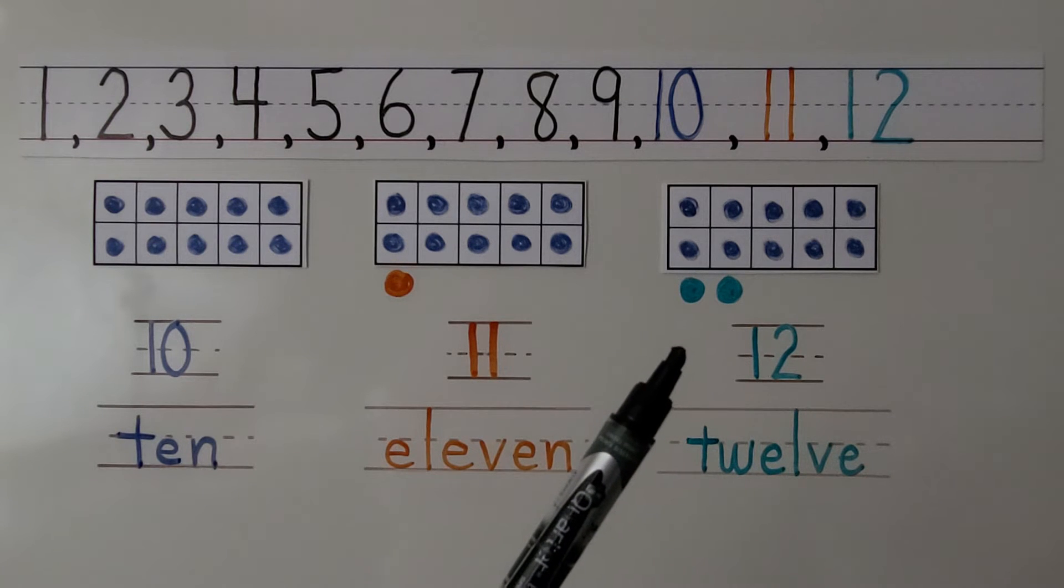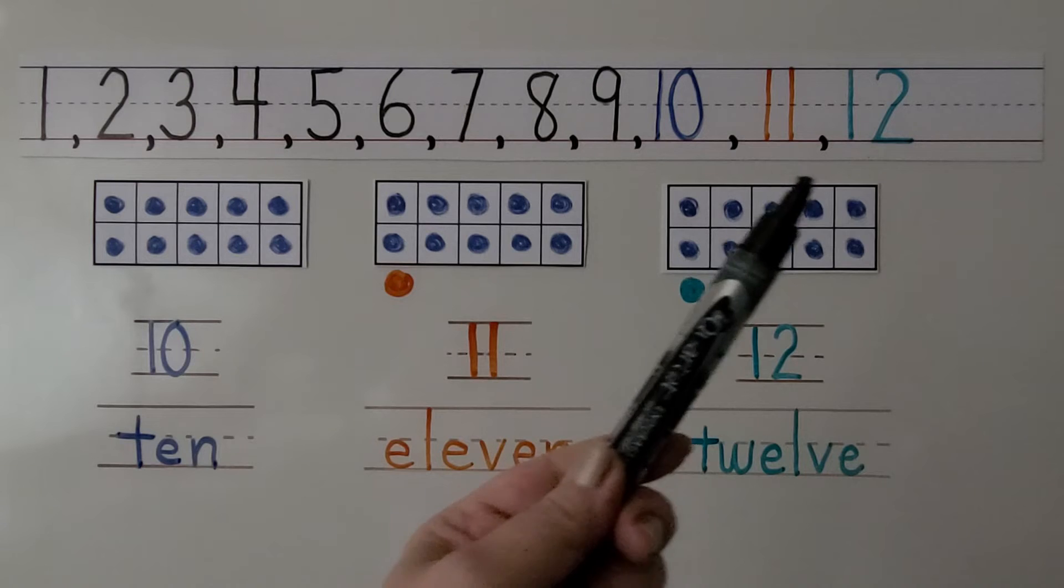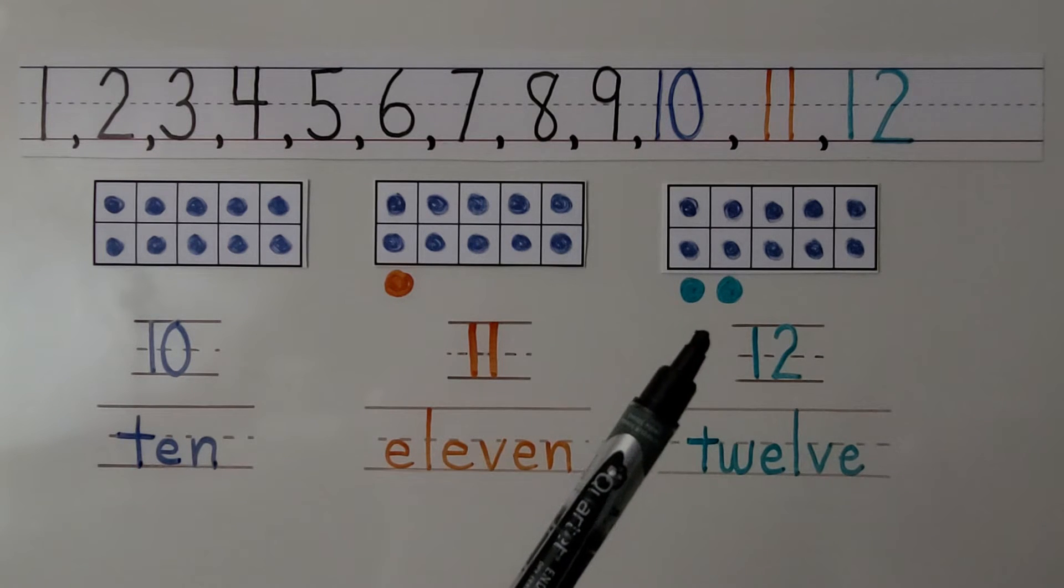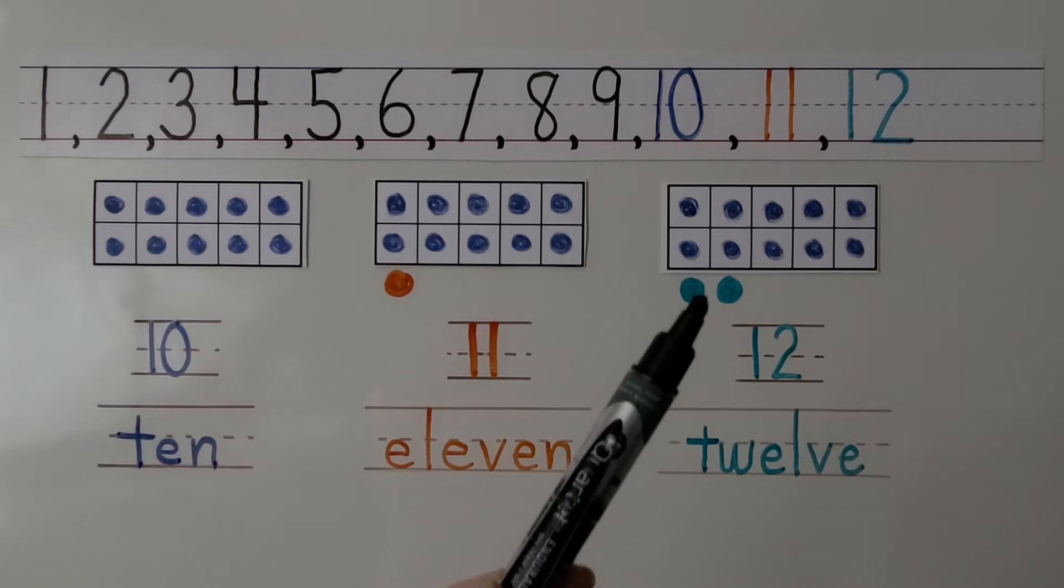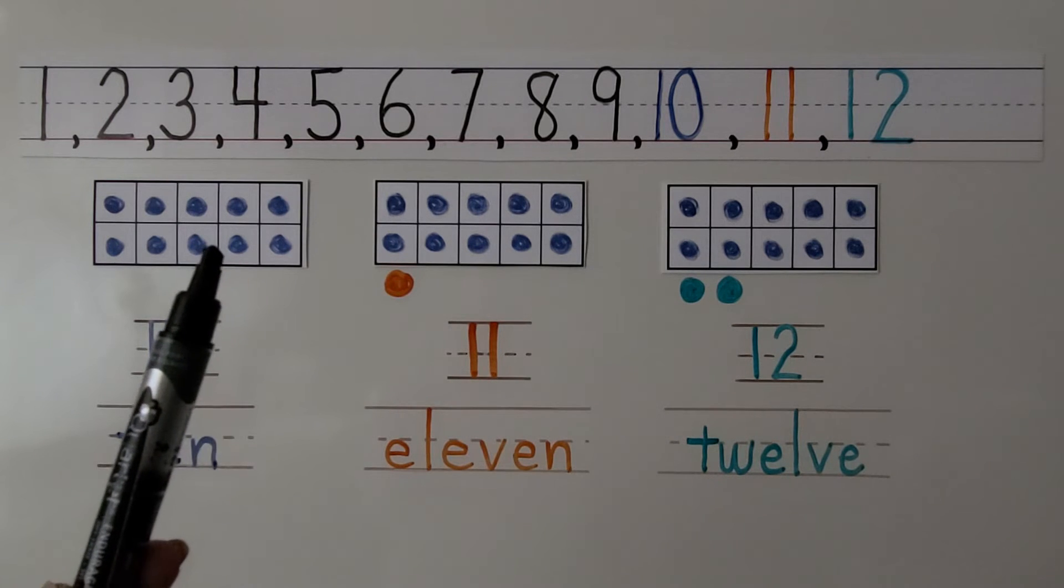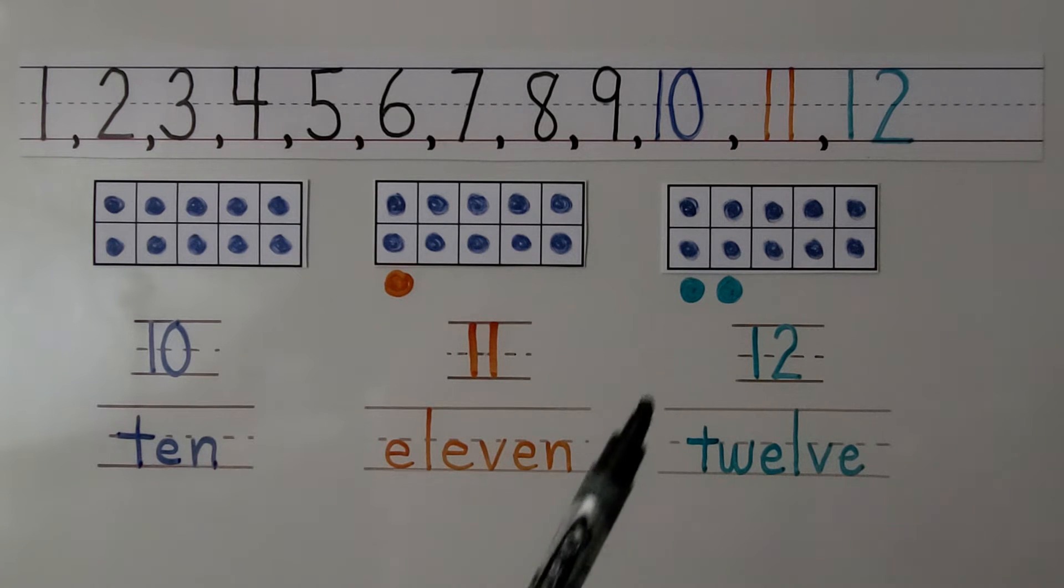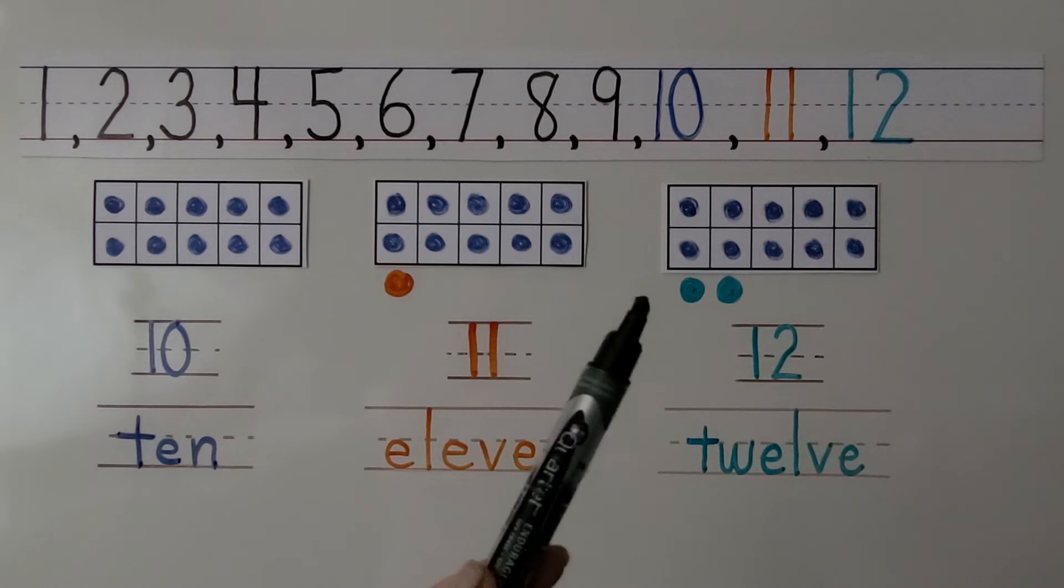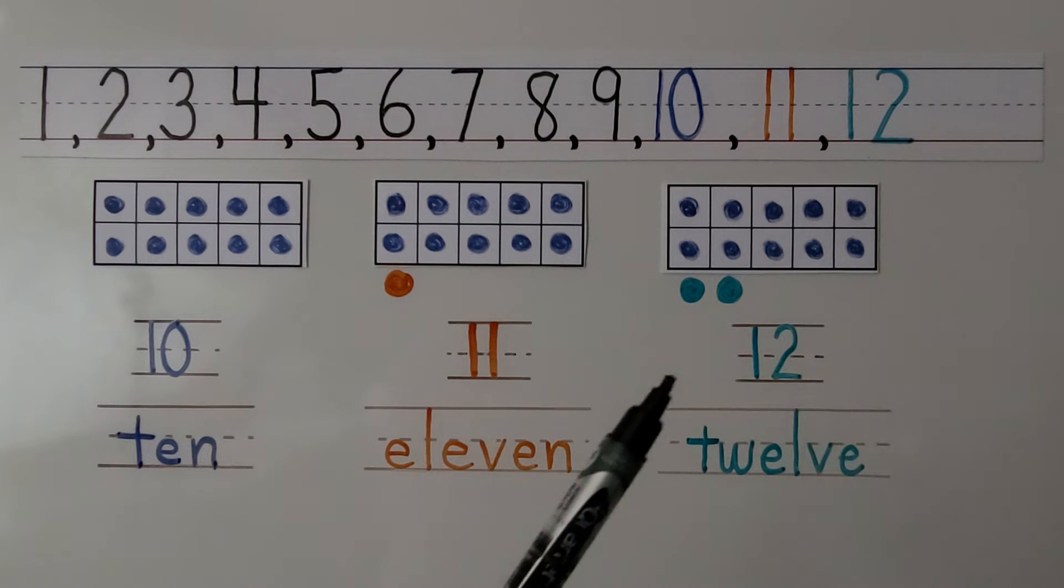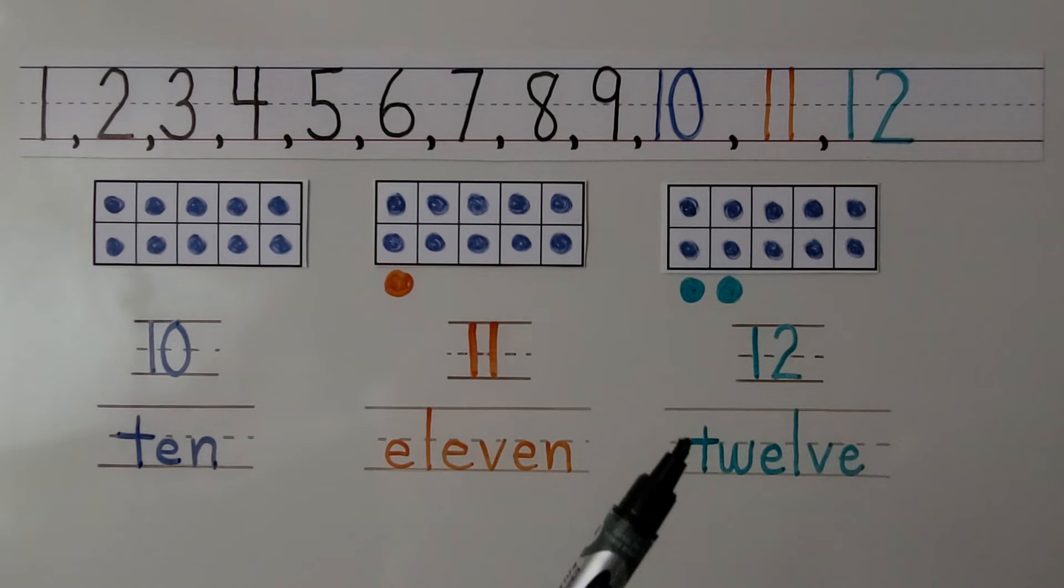12 is the next number after 11 in counting order. 12 is one more than 11, and 12 is two more than 10. We can show 12 by placing two counters below a full ten frame. Here's the number 12, here's the word 12, T-W-E-L-V-E.